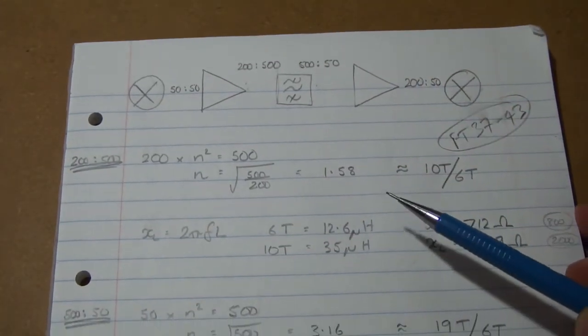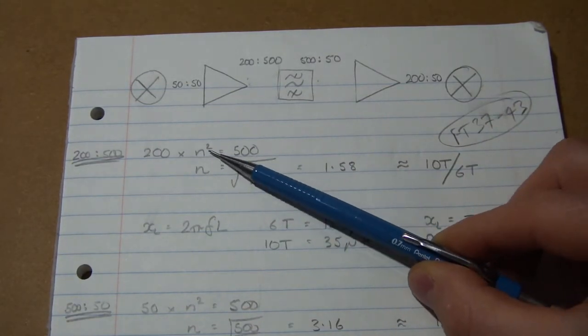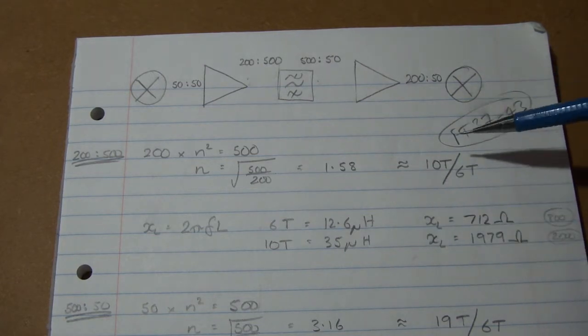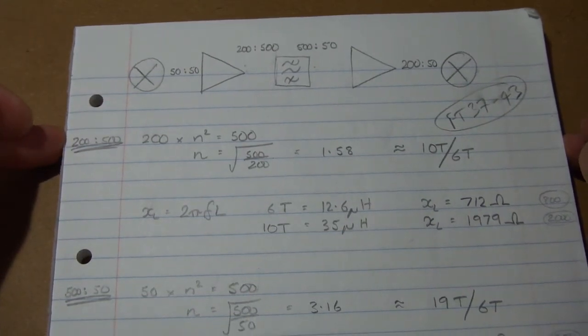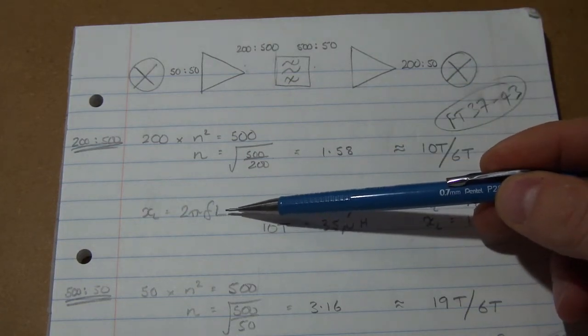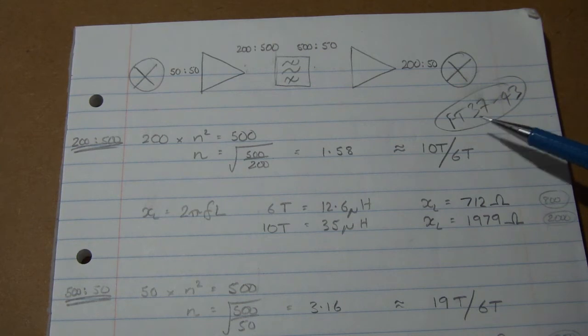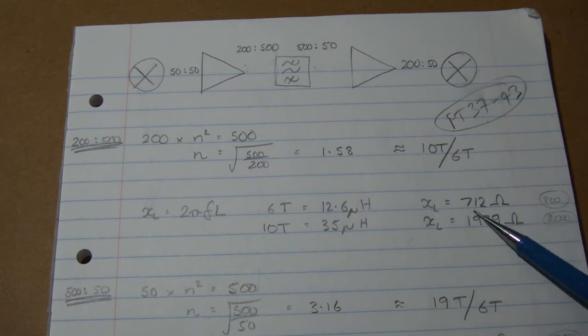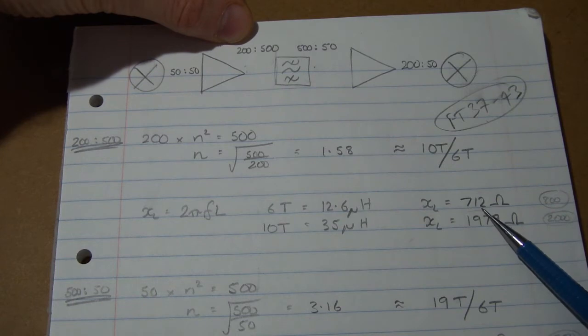If we go with 200 times n squared gives us 500, then we can solve for n, and n equals approximately 1.58, so that's our turns ratio, which is approximately equal to 10 turns over 6 turns. So just working out what that's going to be in terms of inductive reactance, just to make sure we're in the ballpark of our 4 times the impedance that it's matching. And we know that XL equals 2πFL, where frequency is 9 megahertz. 6 turns on an FT37-43 gives us 12.6 microhenries, which gives us an inductive reactance of 712 ohms. So that's on the 200 side, 4 times 200 equals 800. So we're a little bit under there, but not by much, so we'll give that a go.